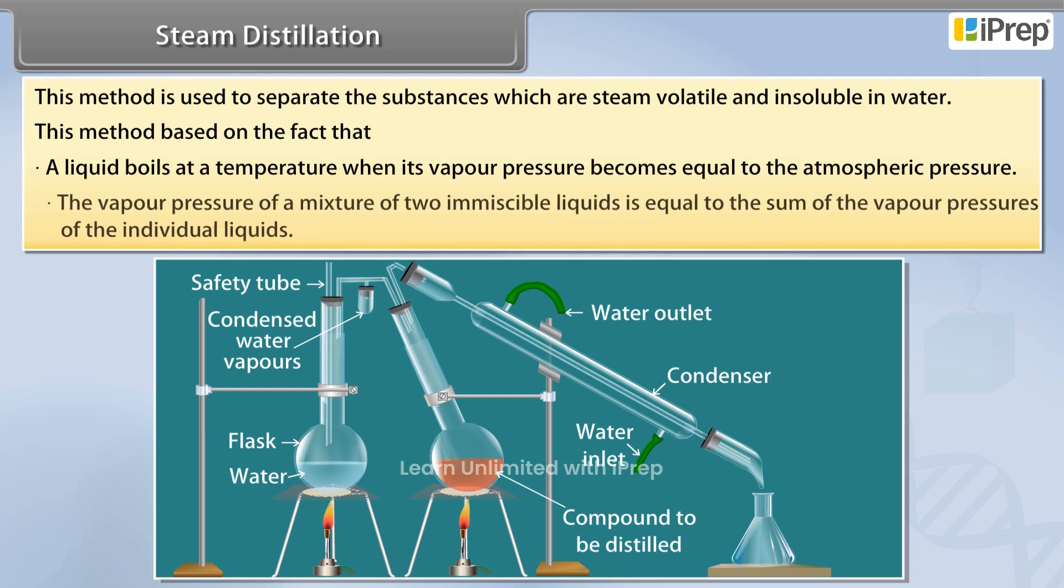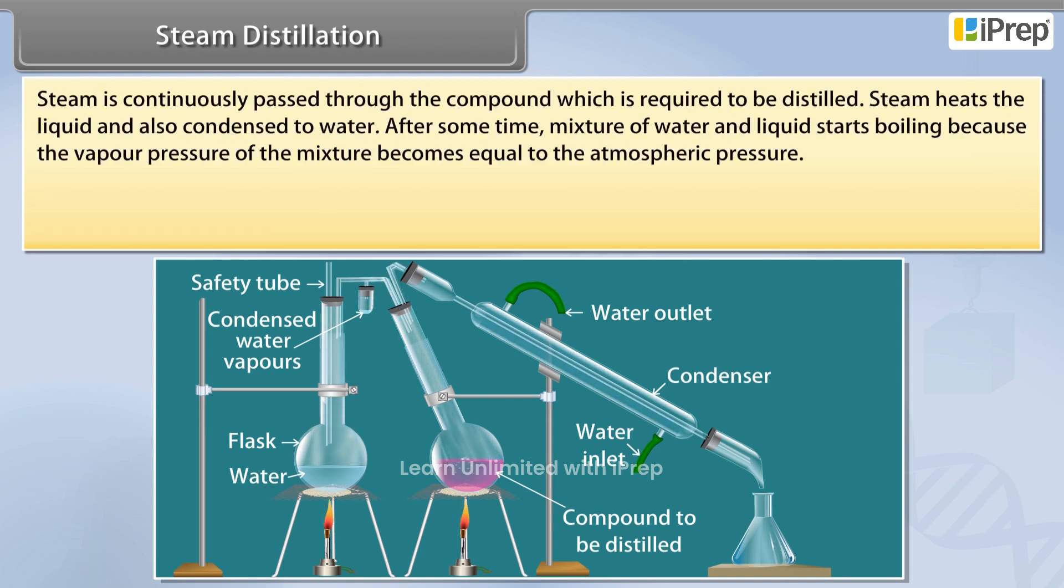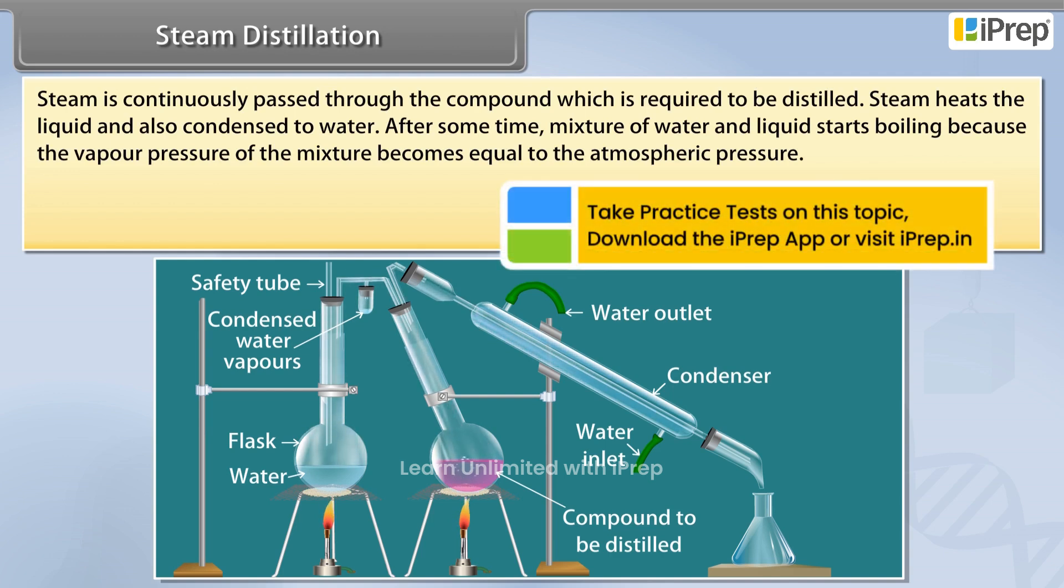The vapor pressure of a mixture of two immiscible liquids is equal to the sum of the vapor pressures of the individual liquids. Steam is continuously passed through the compound which is required to be distilled. Steam heats the liquid and also condenses to water.